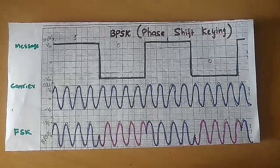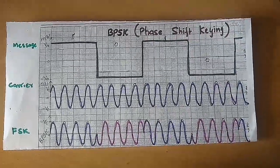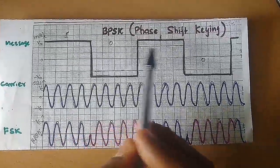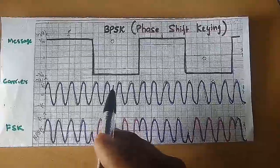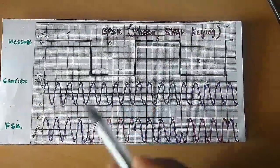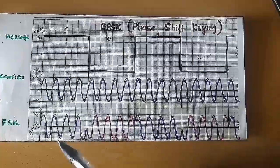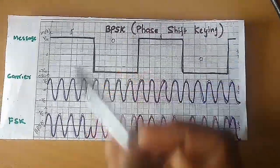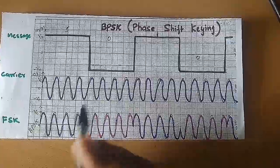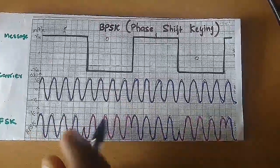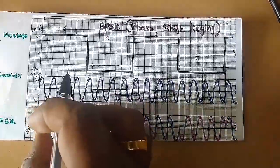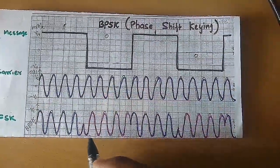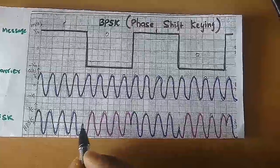In this video, we will demonstrate an experiment to generate a BPSK signal and its demodulation. Binary phase shift keying is a digital modulation scheme where the binary data is represented by two different phase states in the carrier signal. Binary data 1 is represented by a carrier signal having fixed frequency and fixed amplitude, whereas binary data 0 is represented by a fixed number of cycles with 180 degree phase shift.